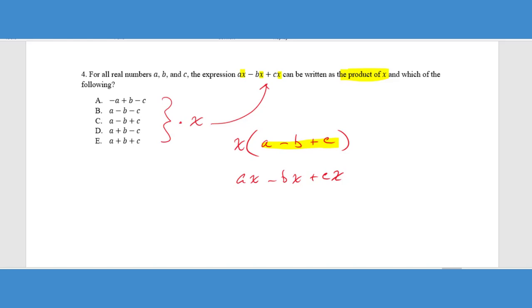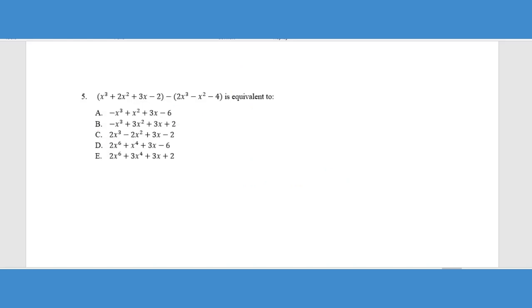And we can see that in the answer choices, that would be answer choice C, A minus B plus C. So that would be the product of that and X. And lastly, this question is no different than some of the earlier questions. It just seems to be more involved.